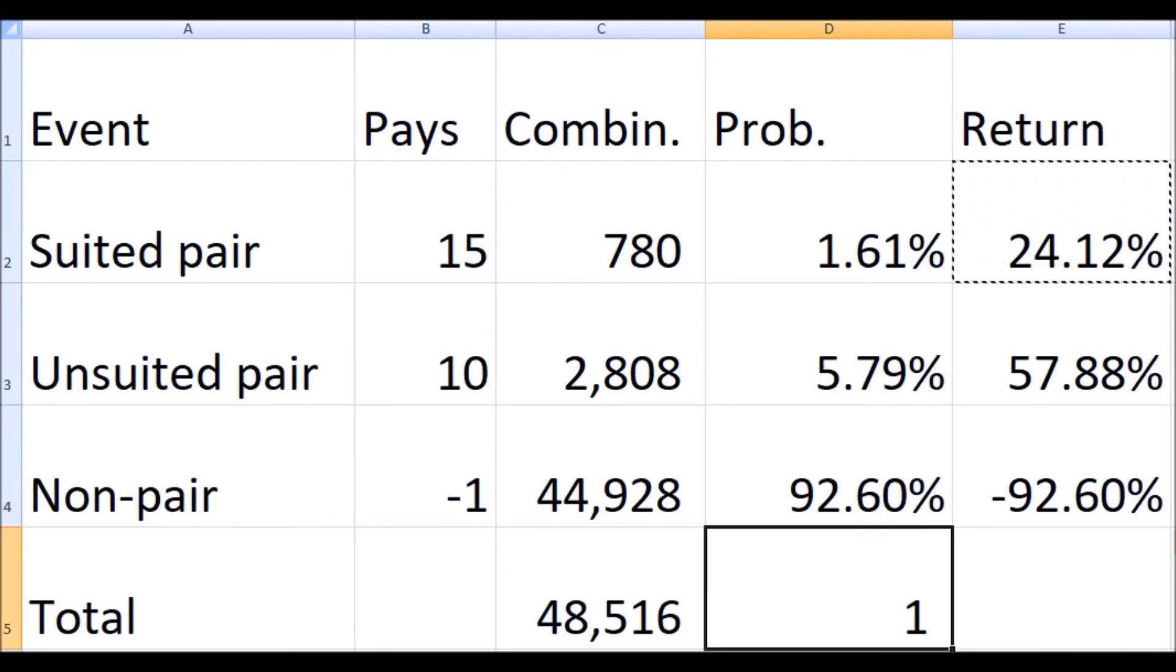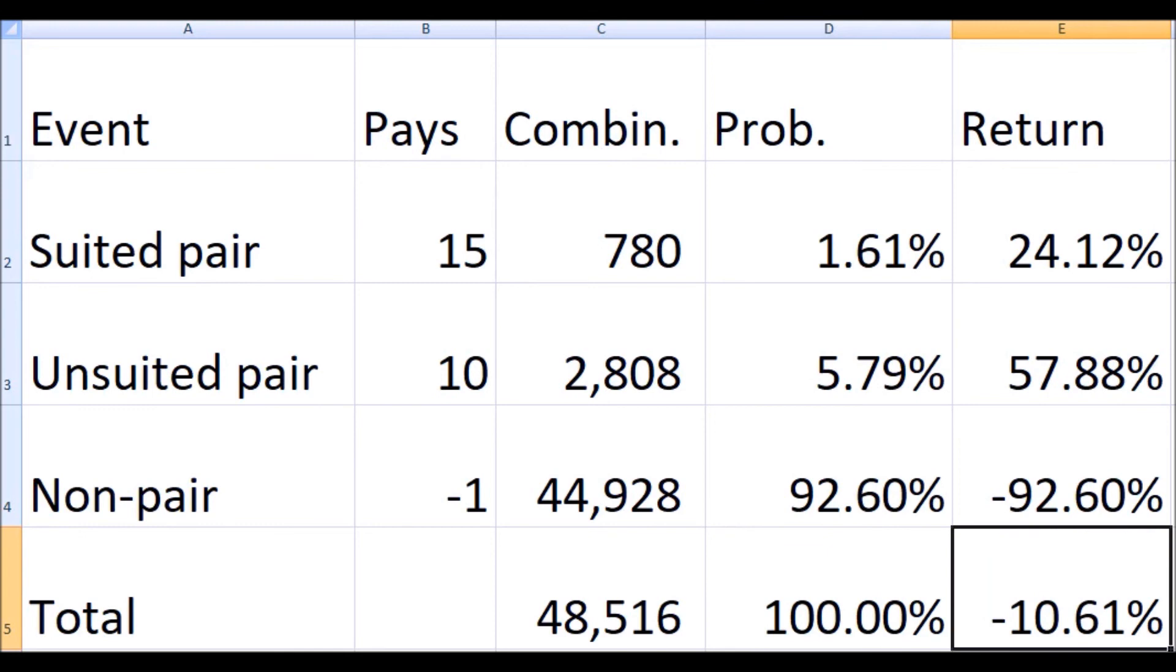So to get the overall value to the player, we just take the sum of that and we get negative 10.61 percent. That means that the player can expect to lose 10.61 percent of all the money he bets on the pair square. Another way of putting that is that the house advantage is 10.61 percent. So in other words, for every dollar bet on this, the player can expect to get back about 89.39 cents and 10.61 cents goes to the casino.